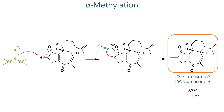To complete the synthesis of Quercusone A and B, the authors then had to methylate the alpha position of the other ketone group. This was accomplished by deprotonating the alpha position to form an enolate, which then reacted with methyl iodide to form the target compounds in a 1 to 1 mixture in a 63% overall yield.